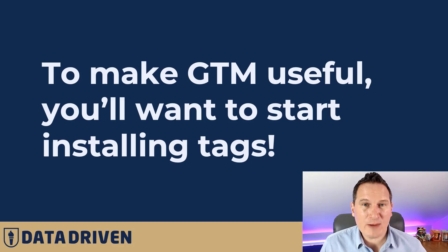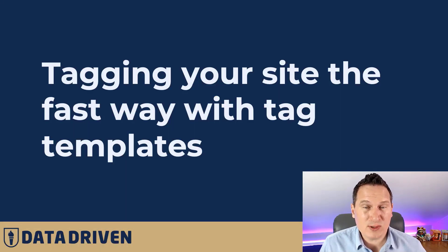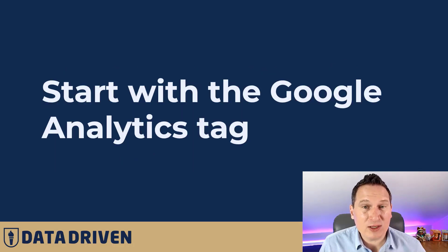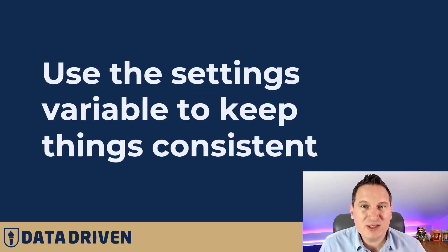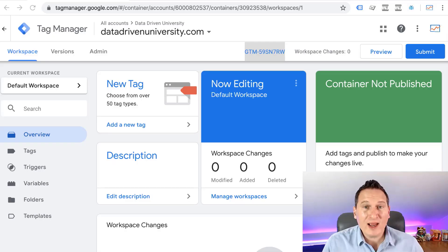Now that we've verified things are running properly, to make GTM successful you need to install tags. So let's start tagging your website. The fastest way to do this is with Tag Templates, which I'll show you once we get back into GTM. I always like to start with a Google Analytics tag. A pro tip: use the settings variable to keep things uniform and save yourself time when adding more tags. So let's install Google Analytics onto this container.